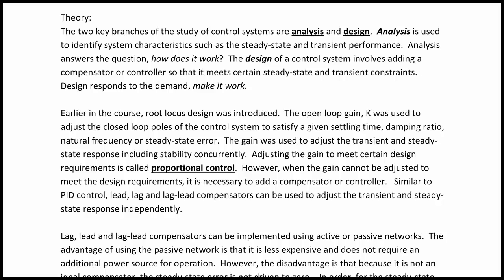Up to this point, we have only looked at control system design where we adjusted the loop gain, or the open loop gain K. This was an example of proportional control. Earlier in the course, root locus design was introduced, and the open loop gain K was used to adjust the closed-loop poles to satisfy a given settling time, damping ratio, natural frequency, or steady-state error. The gain was used to adjust the transient and steady-state response, including stability concurrently.